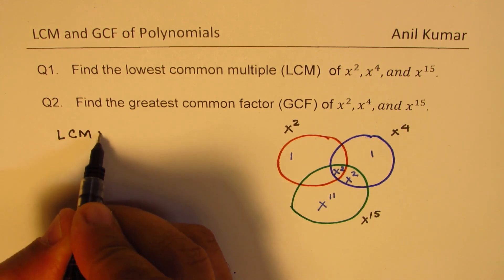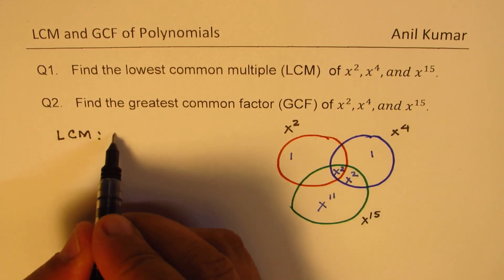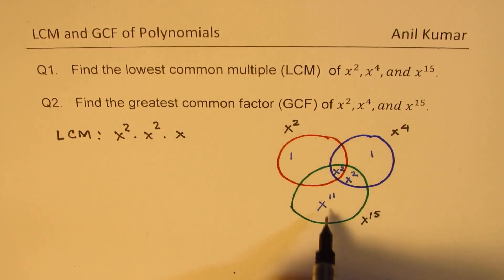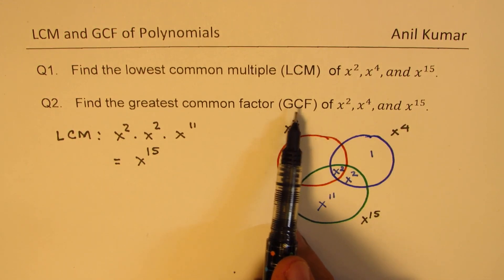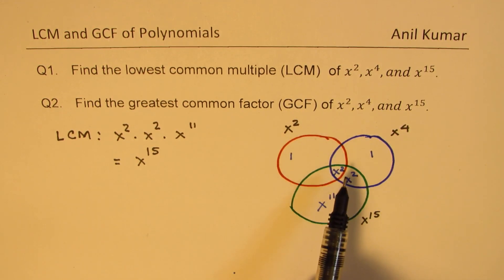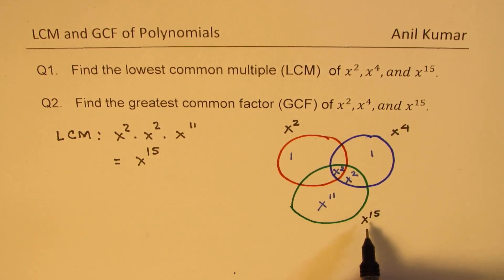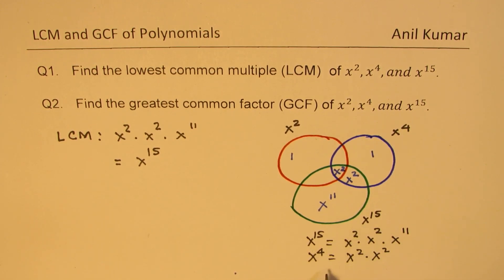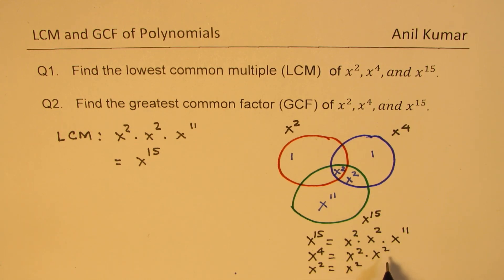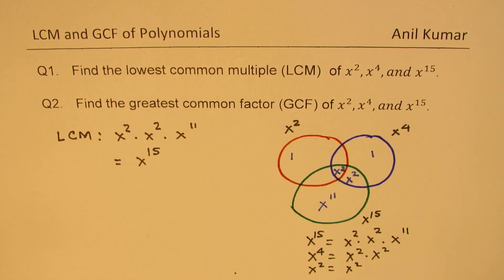The LCM for these three polynomials is the common multiple, so you just multiply all of them. We have x squared times x squared times x to the power of 11, which equals x to the power of 15. So x to the power of 15 is the LCM. You can see that x to the power of 15 equals x squared times x squared times x to the power of 11, and x to the power of 4 is written as x squared times x squared. That is how we find the LCM.